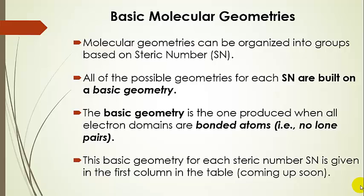We can organize all of these molecular geometries into groups based on steric number. For each steric number, there's going to be something called a basic geometry — the one produced when all of the electron domains are bonded atoms, meaning there are no lone pairs on the central atom. As we add lone pairs in place of bonded atoms, we get different geometries, all based on the basic geometry for that steric number.